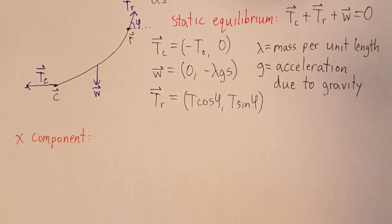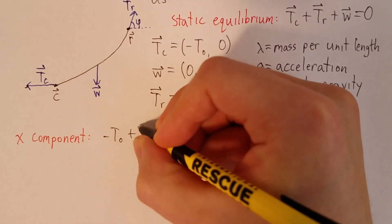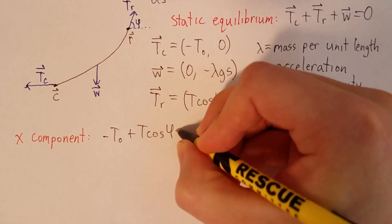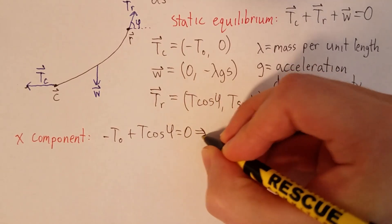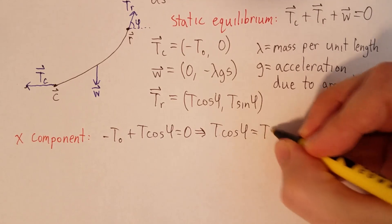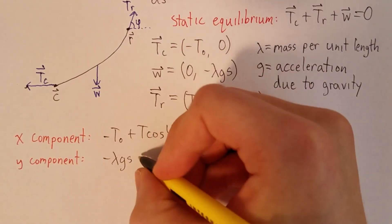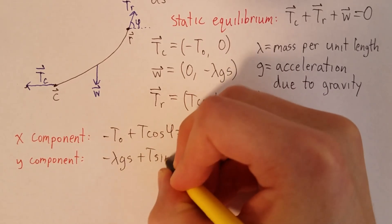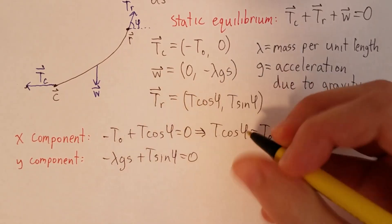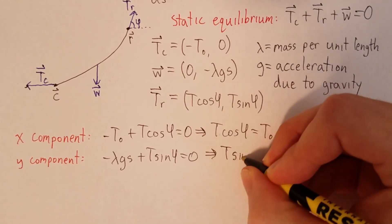Looking first at the x component, we see that minus T0 plus T cos φ equals zero, or T cos φ is equal to T0. For the y component, we have minus λgs plus T sin φ is equal to zero, or T sin φ is equal to λgs.